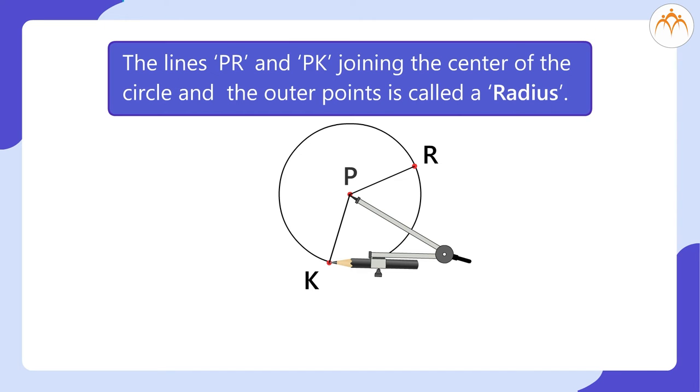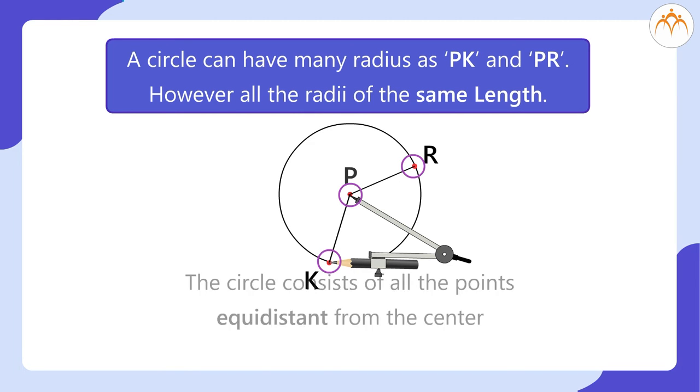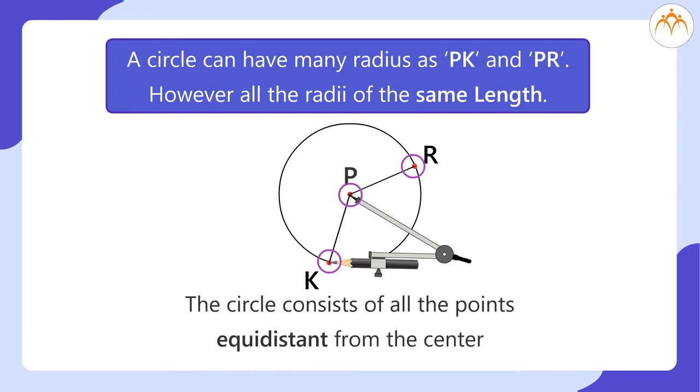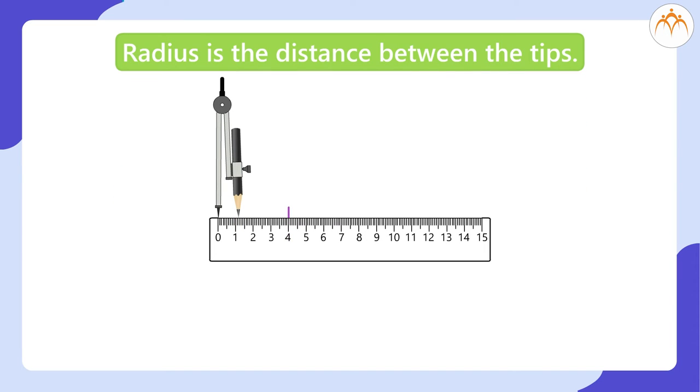The lines PR and PK joining the center of the circle and the outer point is called a radius. A circle can have many radius as PK and PR. However, all the radii are of the same length. It is the length between the two tips, metal tip and pencil tip. The circle consists of all the points equidistant from the center. Radius is the distance between the tips.